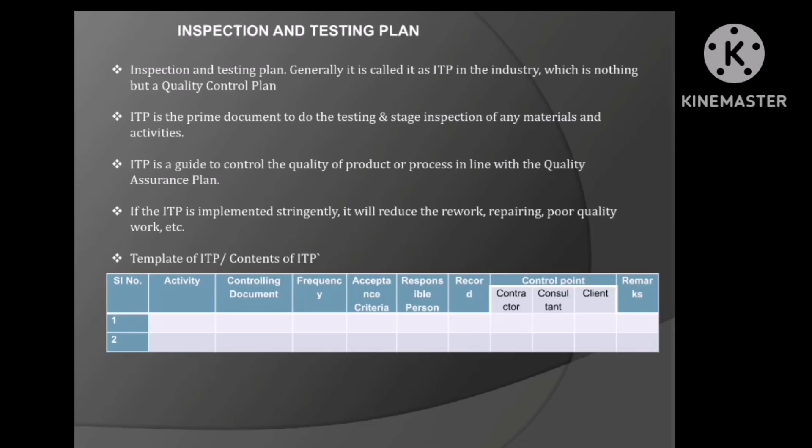The activity may be inspection or testing. If it is an activity, there will be inspection. If it is for a material, there will be testing. Then control of documents, or reference documents — what are the documents and standards to be referred for the particular activity or testing. The third one is frequency: at what random interval is the testing or inspection to be carried out. Then acceptance criteria — the specified value for the material testing or the inspection. Then the responsible person — who is going to execute the testing or the inspection.